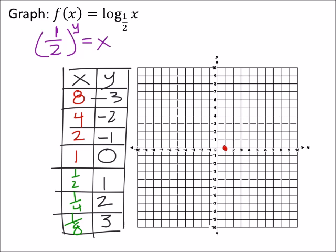So let's look. We've got two, negative one. Then I've got four, negative two. And then I've got eight, negative three. And then I've got one half, one. And this is just getting really close to that y-axis.